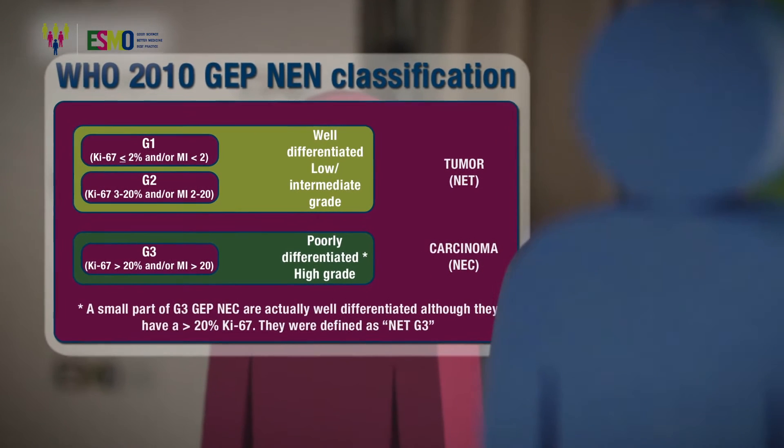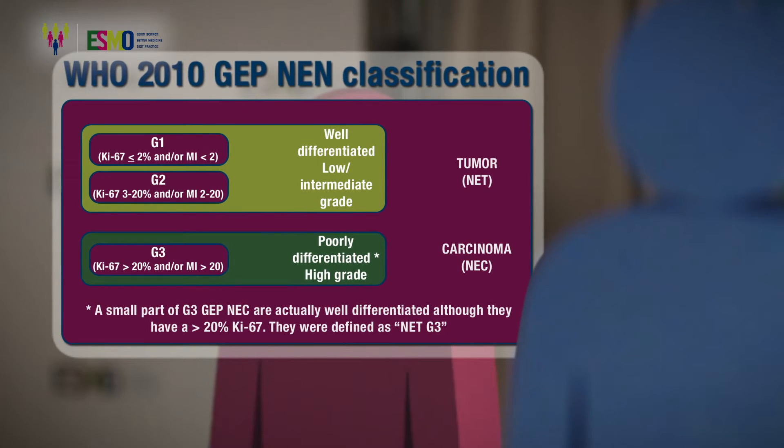The WHO 2010 GEP NEN classification is based on the Ki-67 and the mitotic index level, distinguishing two main groups. Less than 20% Ki-67 are usually called neuroendocrine tumors and they are the well-differentiated or low-intermediate grade.